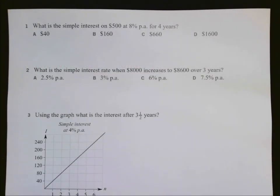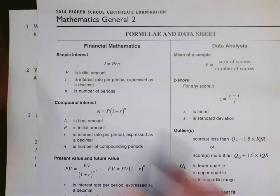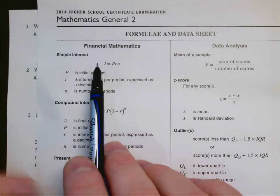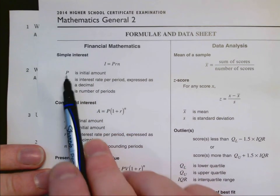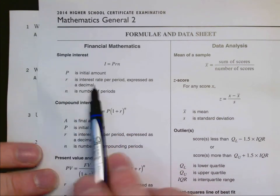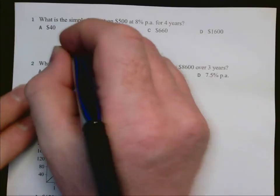In question 1, we are asked for the simple interest. So we need to be looking at our formula sheet. There's a formula here called simple interest: I equals PRN. P is the initial amount, R is the rate, and N is the number of periods. So let's use that.